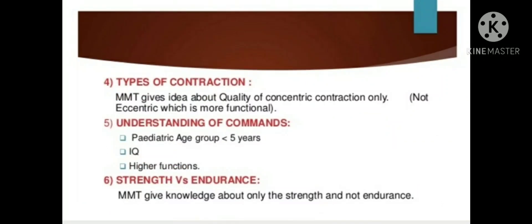Types of contraction: MMT gives information about the quality of concentric contraction only, not eccentric contraction, which is more functional. Understanding of commands: it is difficult for certain age groups to understand MMT commands, such as the pediatric age group under 5 years and people with low IQ or higher mental disorders. Strength versus endurance: MMT gives knowledge only about strength, not about endurance.